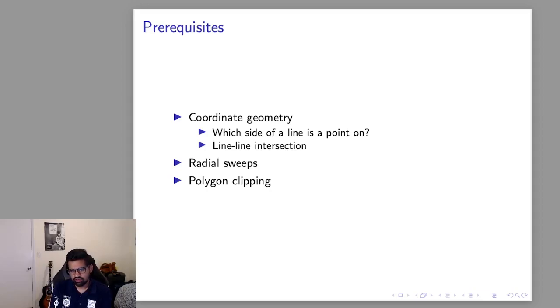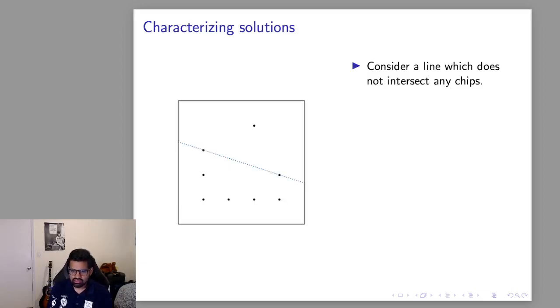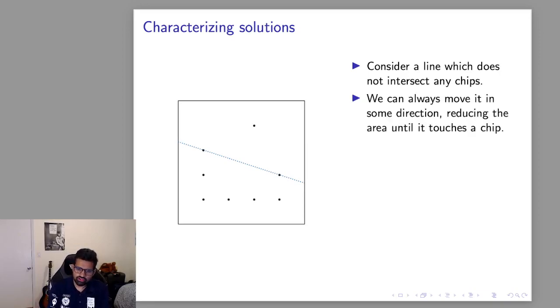So with that all out of the way let's try and characterize all of the candidate lines we need to consider. One thing that's pretty apparent is if you start with a line that doesn't intersect any chips you can always move that line on the square in order to get a smaller area but still cover the same number of chips on your half. So every candidate line has to go through at least one chip.